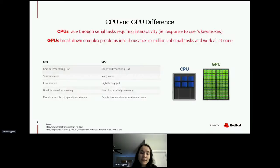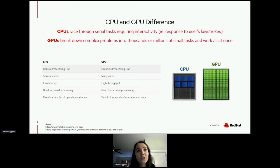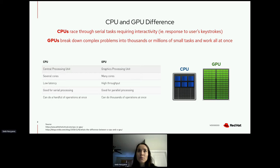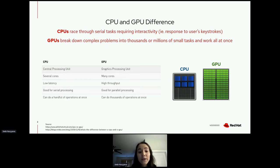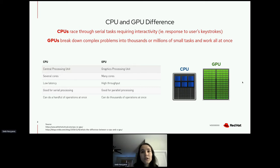Before I dive into multi-node and all that, I wanted to cover the difference between CPUs and GPUs. CPUs are composed of just a few cores but with lots of cache memory. CPUs are optimized to switch between tasks really fast, so if you have any kind of serial processing they're actually really good at that.